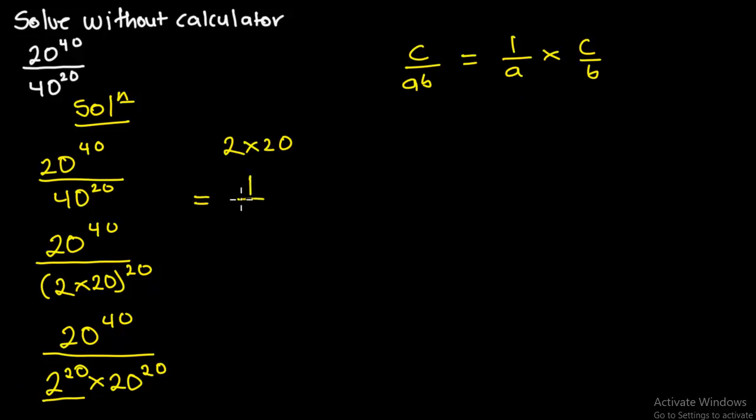So we are going to have 1 over 2 to the power 20 times 20 to the power 40 all over 20 to the power 20. Now from this side I want to use the law of indices.